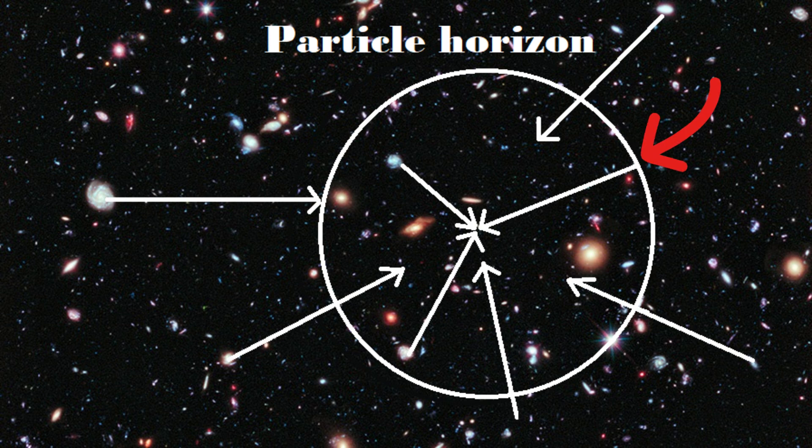A sphere with such a radius and an observer in the center is called the particle horizon. Beyond it, we cannot see, even with the largest telescope. But if we can't see anything behind it, it doesn't mean that there's nothing there.